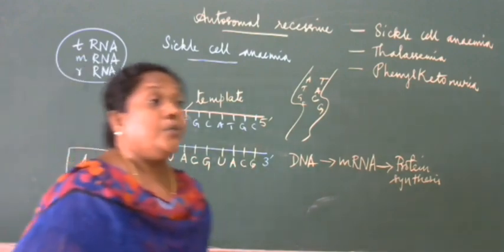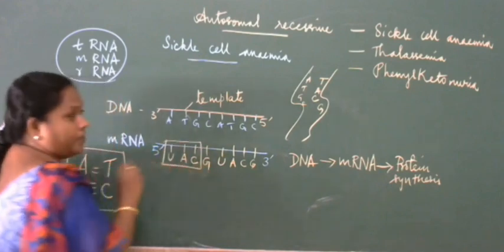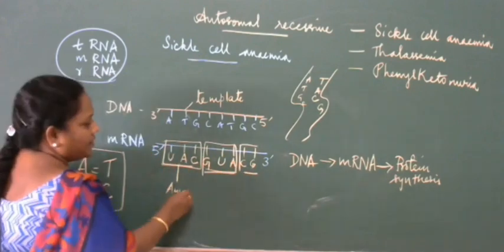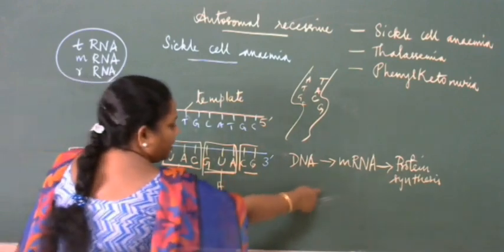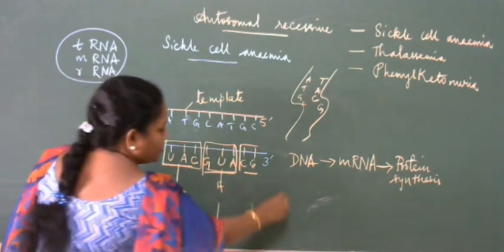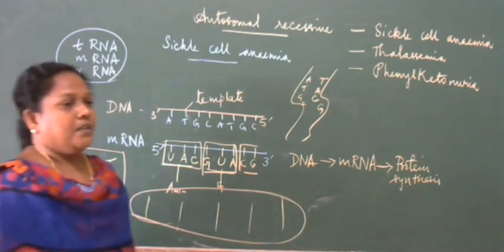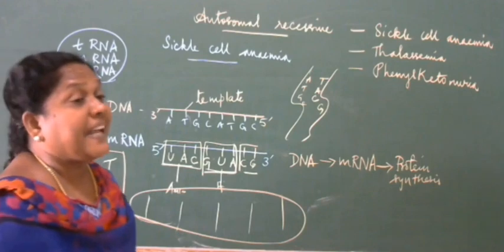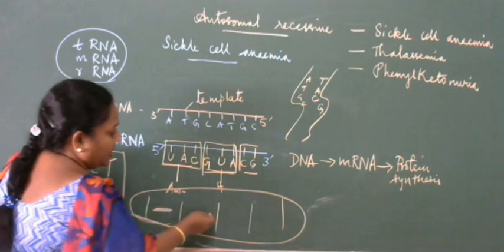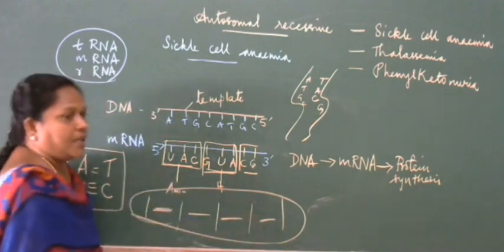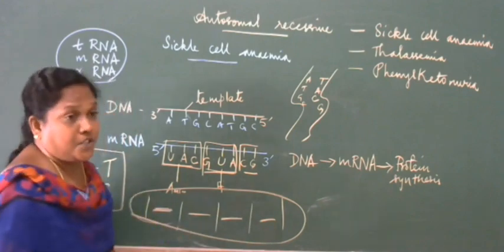When we learn about mutation, codons are involved. Each codon of 3 bases codes for one amino acid. These amino acids join together to form a protein — this chain is called a polypeptide. Each amino acid is joined with the help of a peptide bond, forming the polypeptide chain.